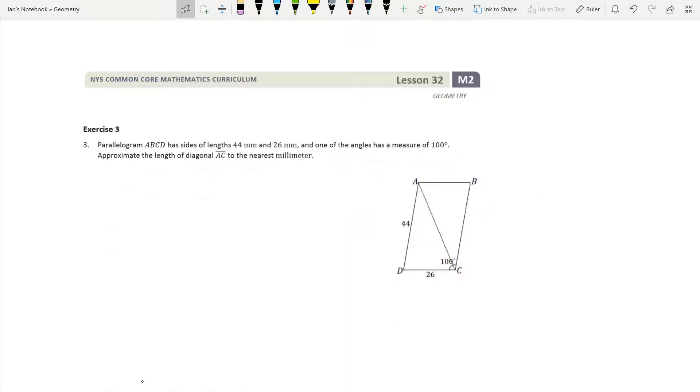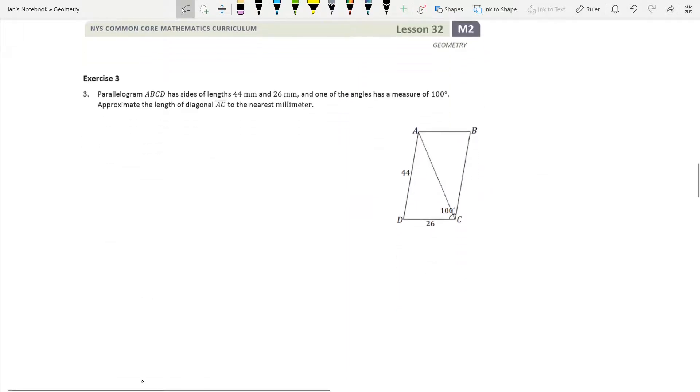So exercise 3. We have parallelogram ABCD with side lengths of 44 millimeters and 26 millimeters, and it shows us where those are, respectively. So AD is 44, DC is 26. And one of the angles has a measure of 100 degrees. We need to approximate the length of this diagonal to the nearest millimeter. So this right here is going to be 80, because we know that in a parallelogram, these two sides have to add up to 180 degrees.